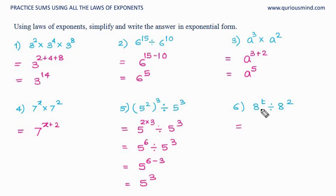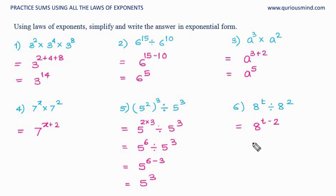Here, like base rule applies — the base remains same in the answer, so powers get subtracted: t minus 2. Let's do the next one.